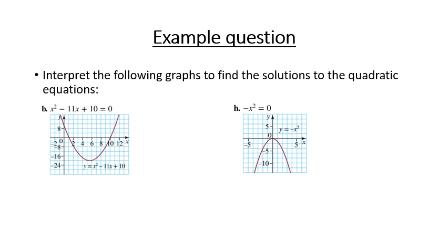So let's have a look at a couple of example questions. Basically, you're just going to be asked to interpret the graph to find the solutions of the quadratic equation. So we're going to look at our first one. We can see that it's got two solutions, and it looks like it crosses at x equals 1, so that's one of the solutions. And it also looks like it crosses at x equals 10, and that's going to be another solution.